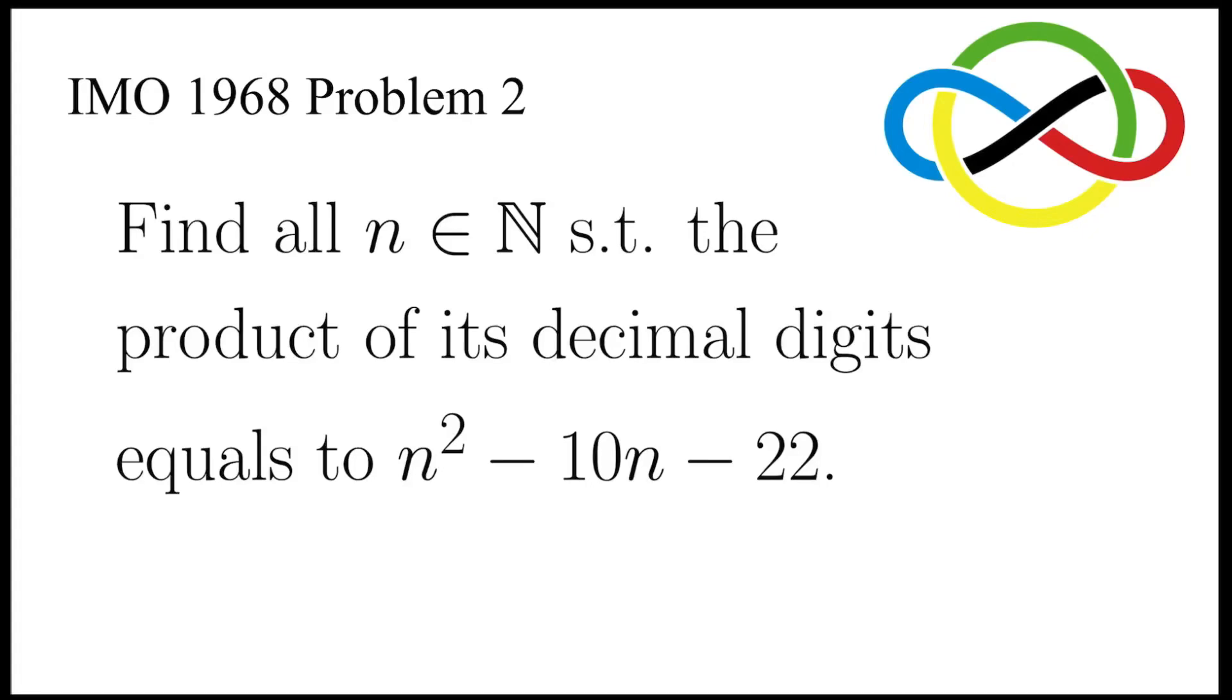This is problem 2 in IMO 1968, to find all natural numbers n such that the product of its decimal digits equals n squared minus 10n minus 22.